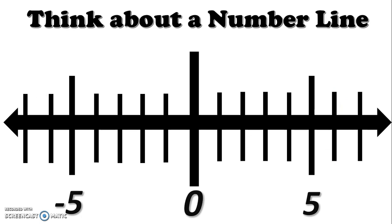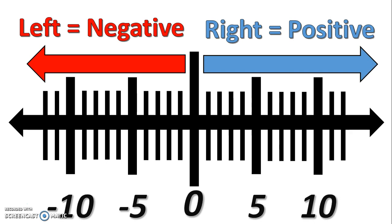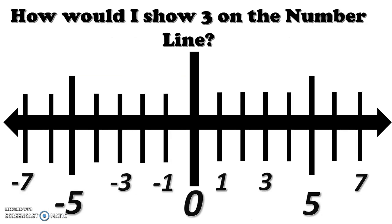Now think about a number line. On the number line, you've got zero in the middle. As you move to the right, you get larger and larger positive numbers, and as you move to the left, you get negative numbers. We're now going to model numbers on the number line and then model adding integers.